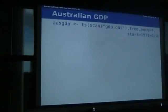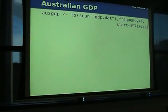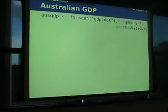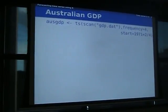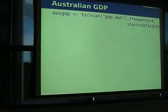First, a quick intro to time series in R. The number one function that we use all the time is TS. You scan in some data and the TS function turns your numerical vector into a time series object, and you add some attributes like frequency and when it starts.